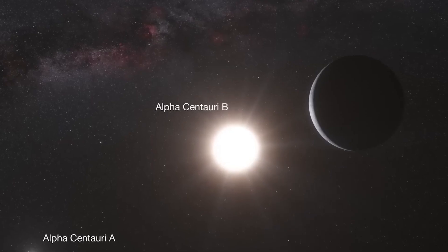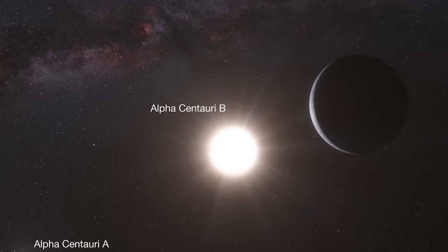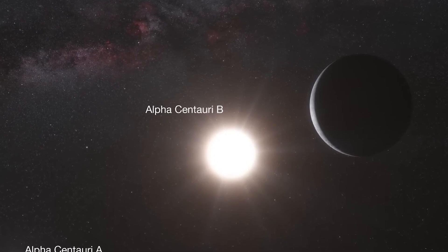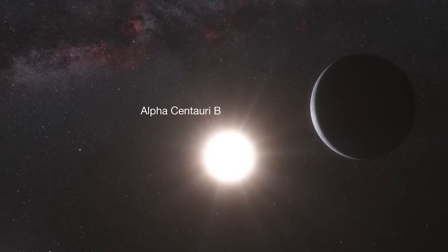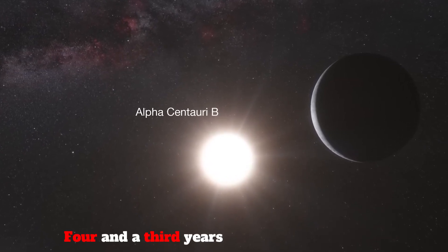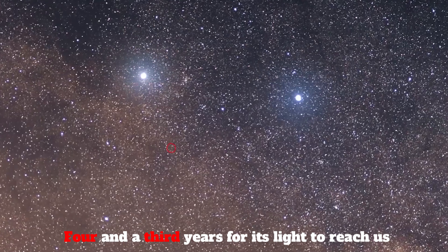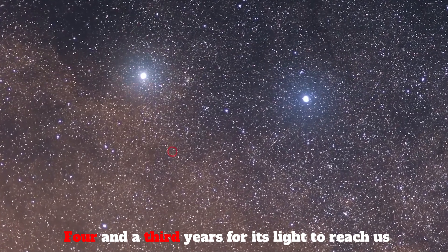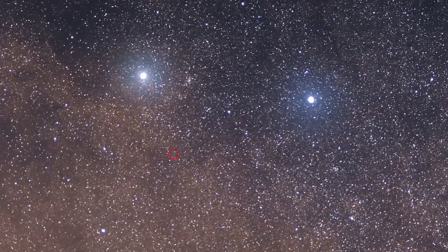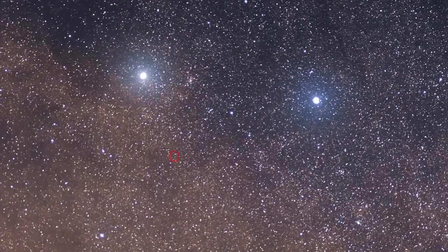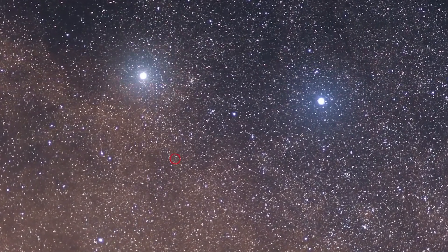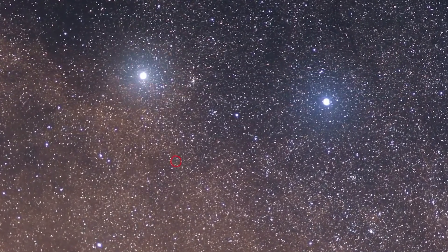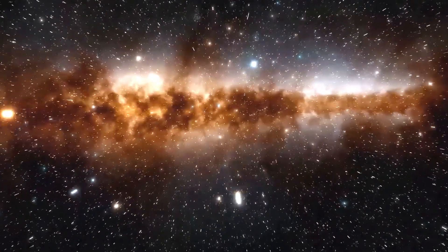Now, consider the star Alpha Centauri b, which is the closest star to our solar system. It takes approximately 4 and a third years for its light to reach us. This means Alpha Centauri is about 4 and a third light years away from us. In other words, the image we see from there is from about 4 years ago.